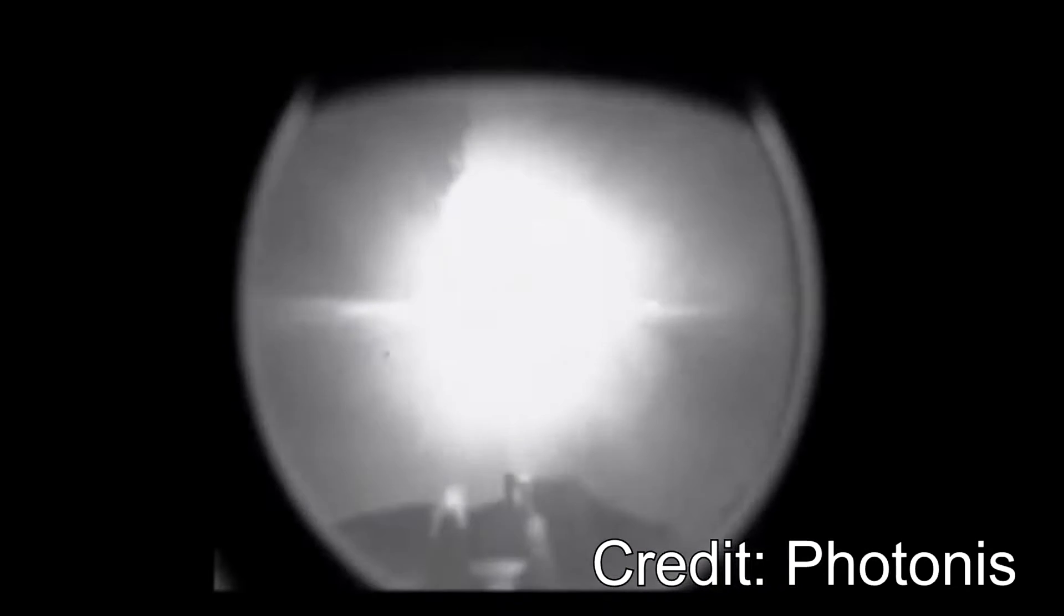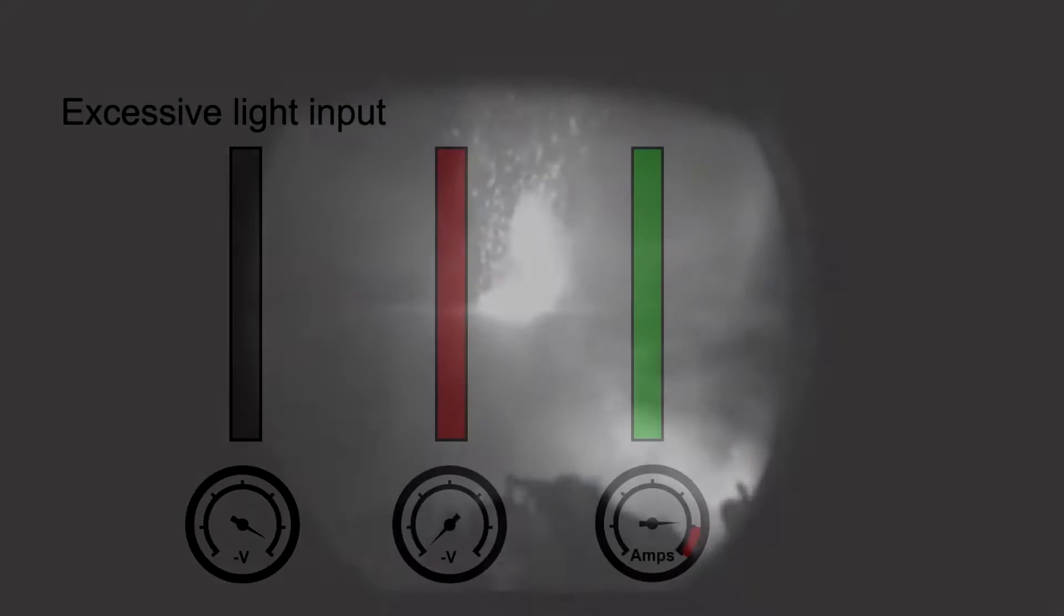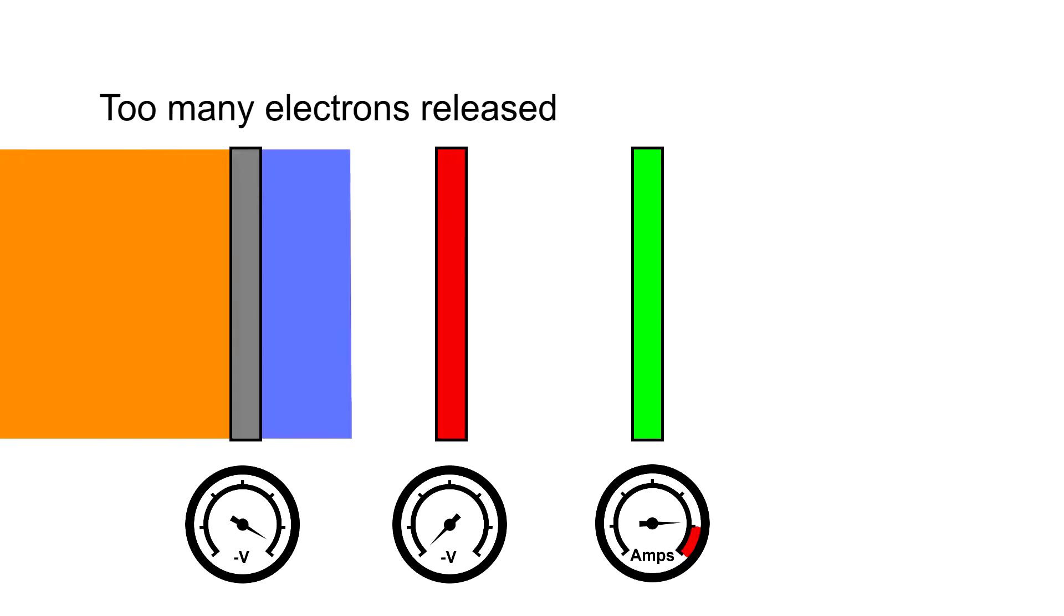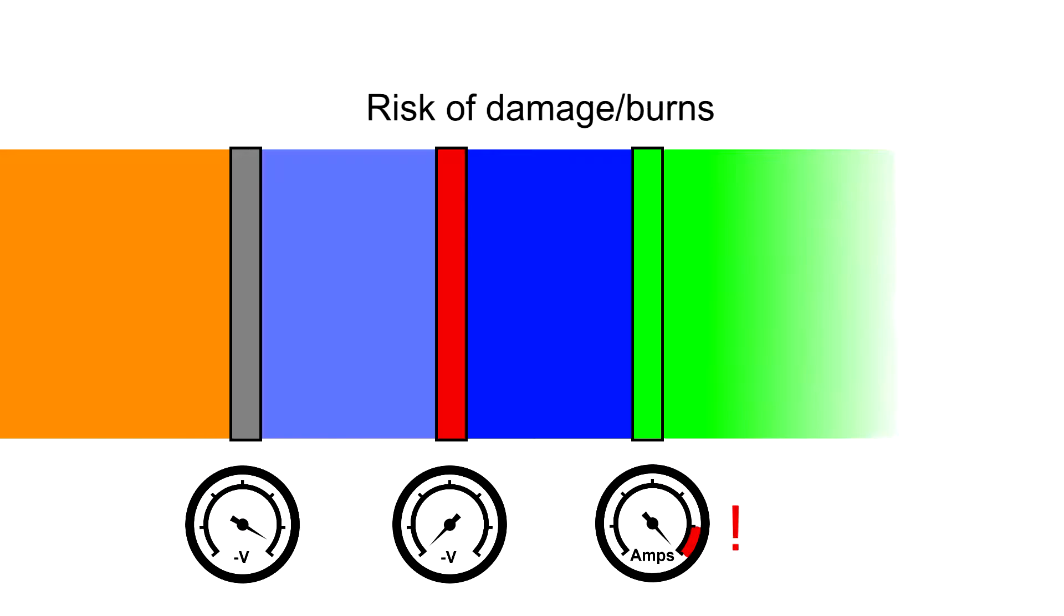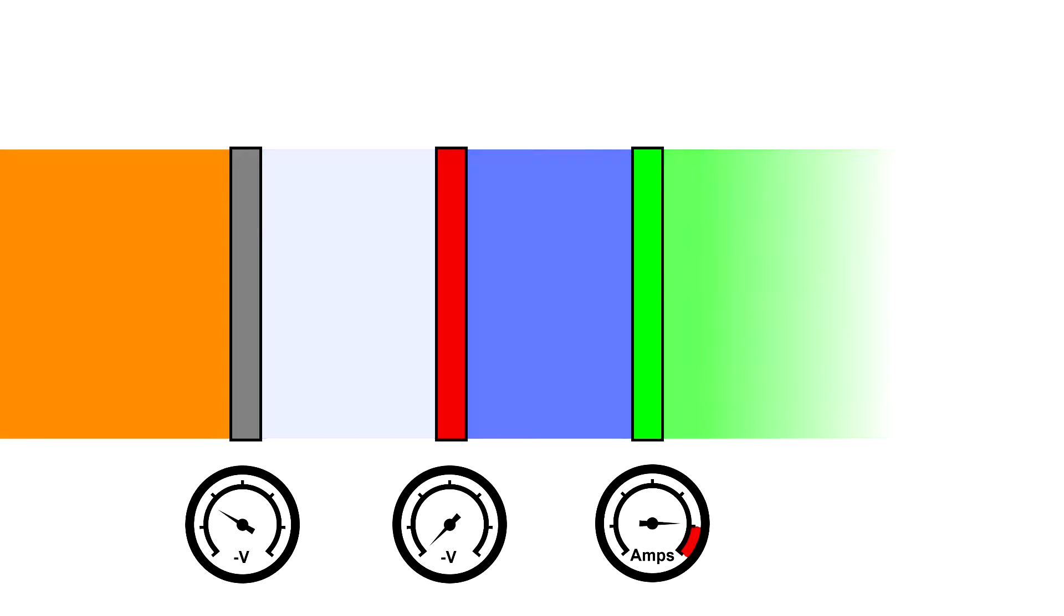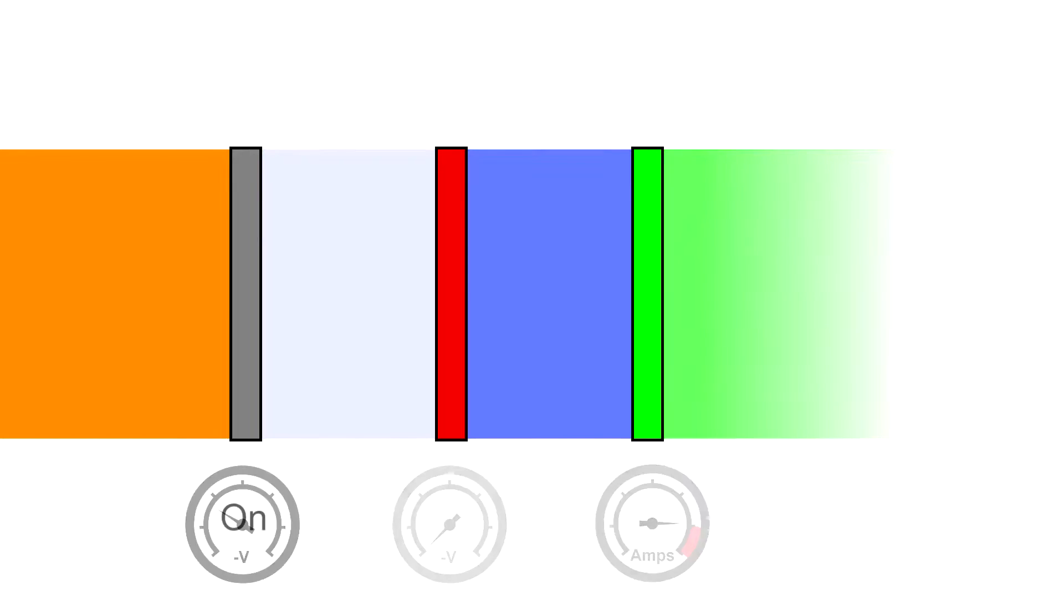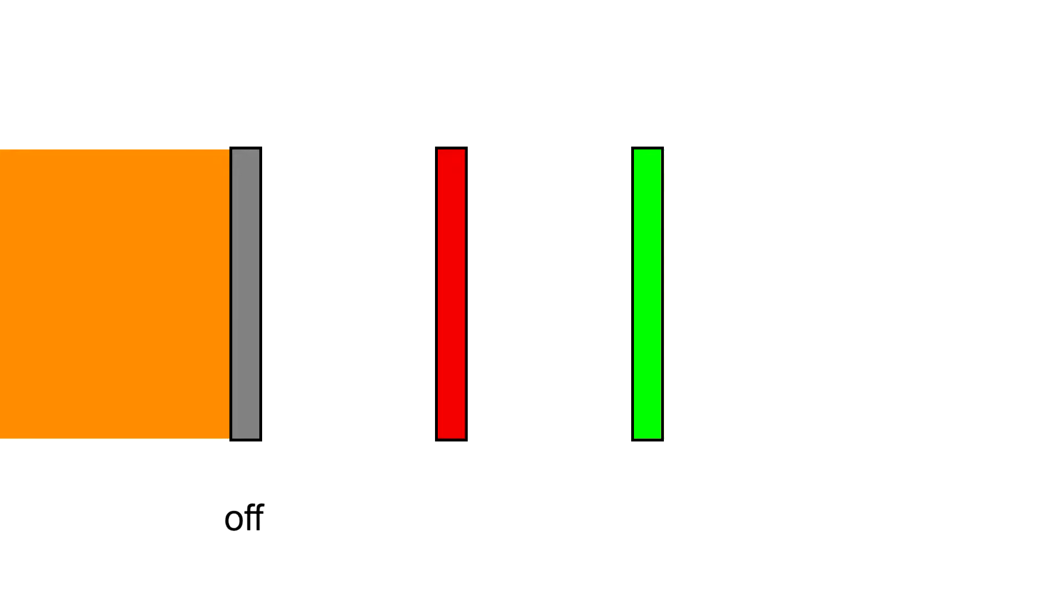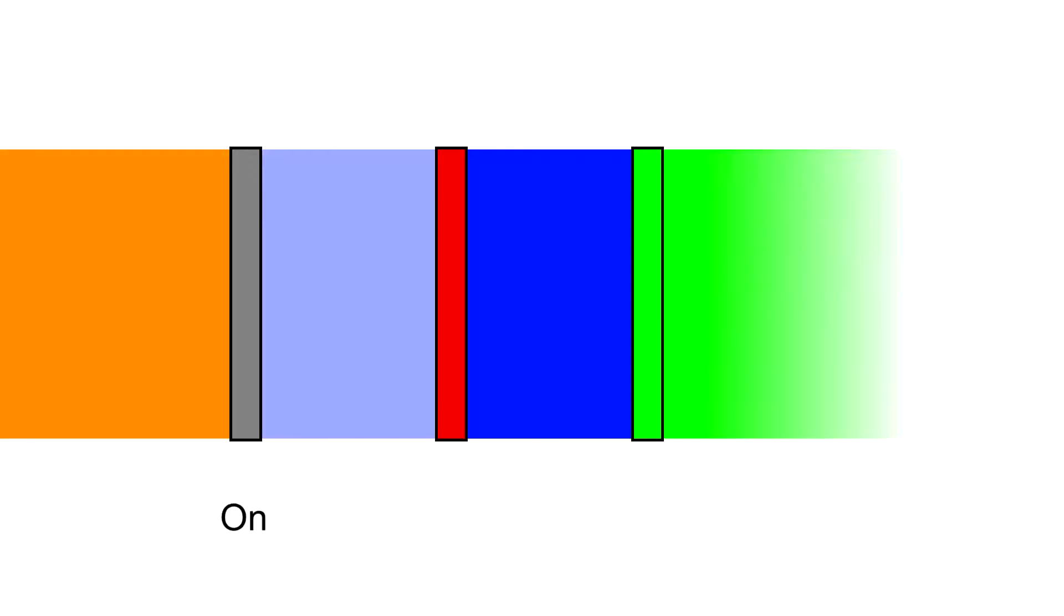This brings us to our next protection mechanism, auto gating. In general, auto gating is found exclusively on modern gen 2 plus and gen 3 tubes. While they may not be as robust as bright source protection for protecting tubes from extreme light exposure, auto gating does help the tube maintain image quality even in high light conditions. While bright source protection protects the tube by reducing the voltage to the photocathode, auto gating rapidly switches the photocathode on and off without lowering the photocathode voltage. During the on cycle, the photocathode remains negatively charged and will continue to release electrons into the tube.